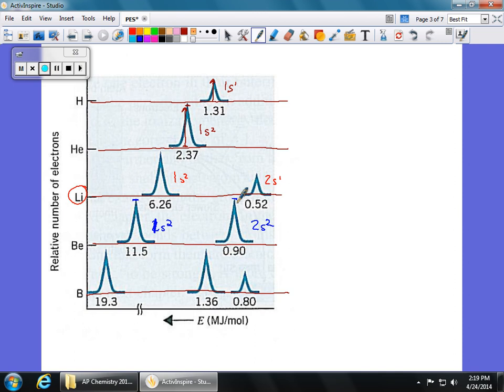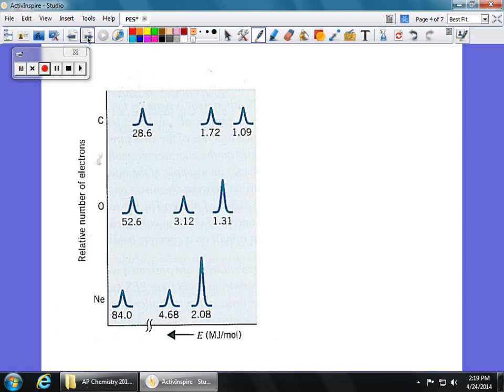So when we get to boron, I bet you can guess, this is going to be 1s2. We're going to have 2s2 for the second peak. And now it's got a third. And we know what comes next. After 2s2, that's going to be 2p1. And it's got a one electron in the 2p. So we can keep going with higher and higher elements.